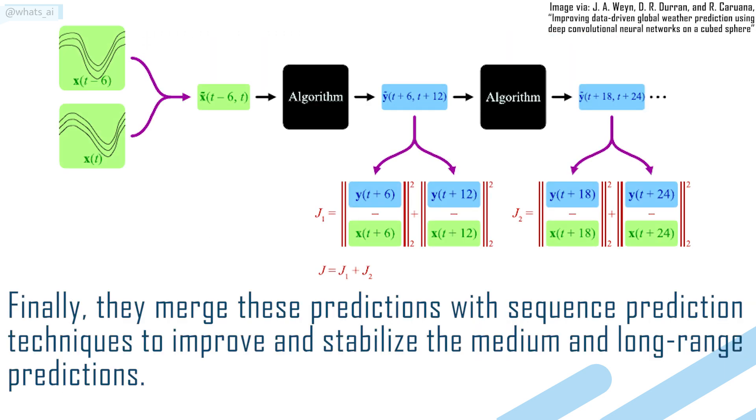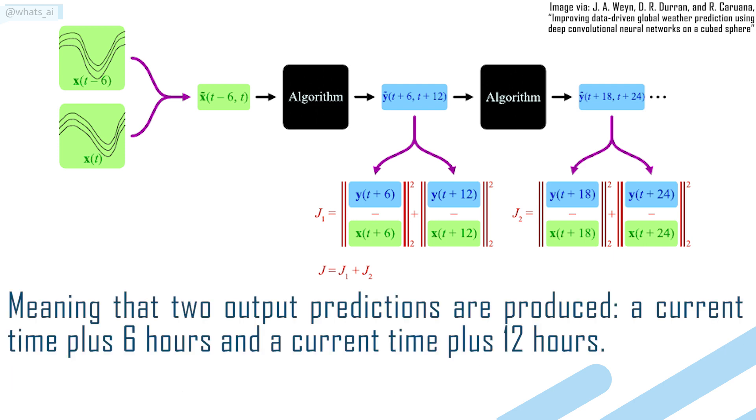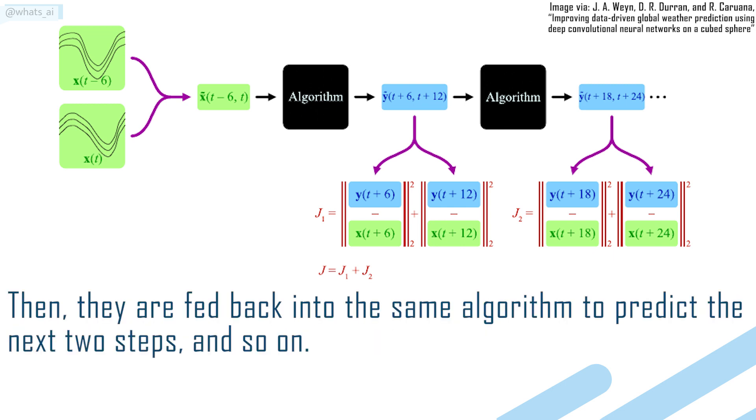Finally, they merge these predictions with sequence prediction techniques to improve and stabilize the medium and long range predictions. Here, both input fields at current time and current time minus 6 hours are fed into the CNN algorithm discussed in the previous step, yielding a 12-hour prediction, meaning that two output predictions are produced, a current time plus 6 hours and a current time plus 12 hours. Then, they are fed back into the same algorithm to predict the next two steps, and so on.